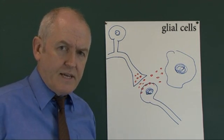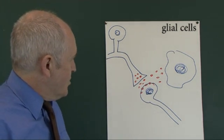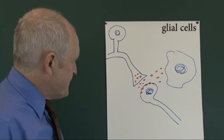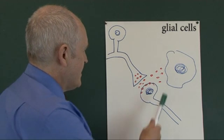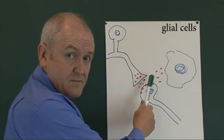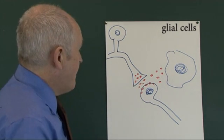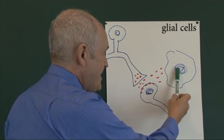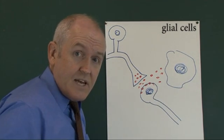But what happens is that when the glial cells are exposed to neurotransmitters, these neurotransmitters can actually activate the genes in the glial cells. The genes in the glial cells can be activated by the neurotransmitters.